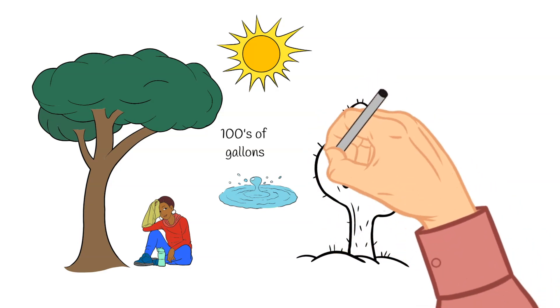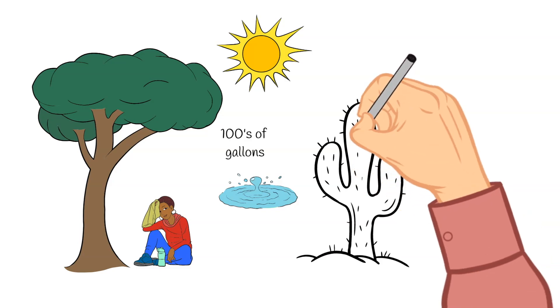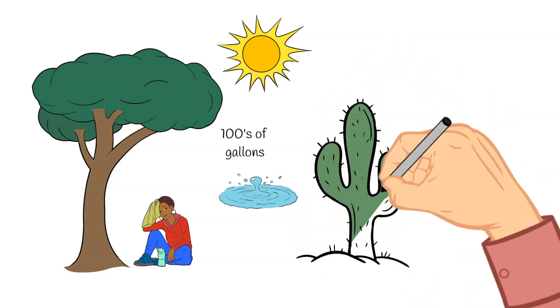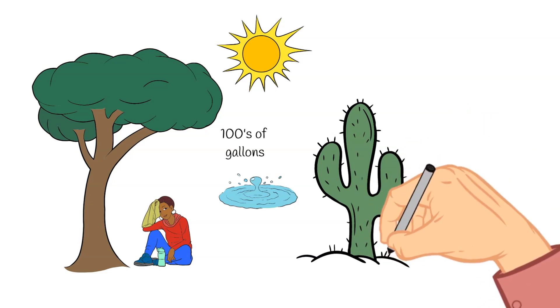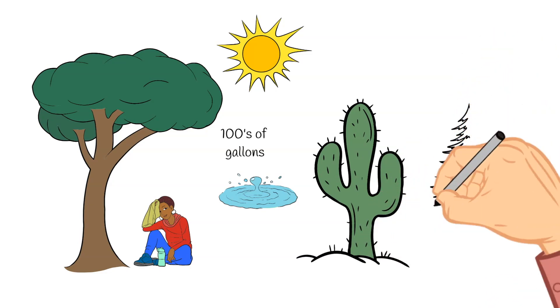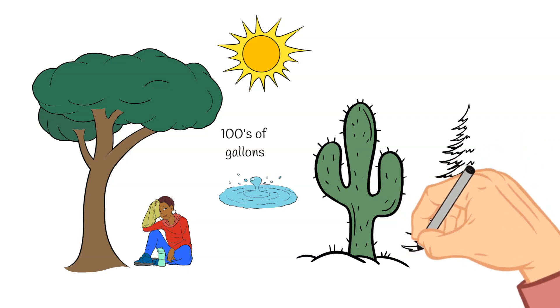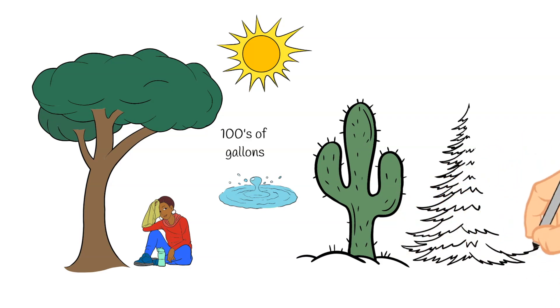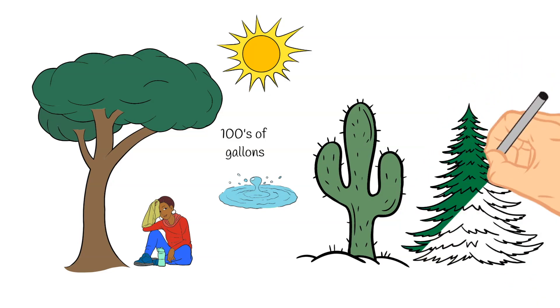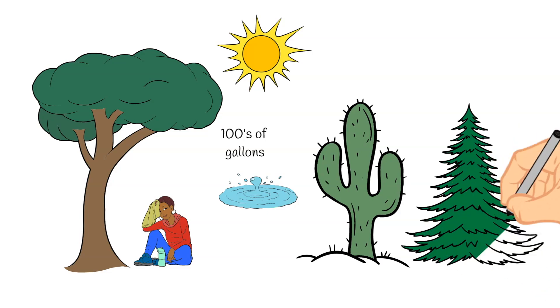Desert plants and conifers have adaptations which reduce water loss. And some examples of these adaptations are reduced leaf areas, as in conifers, or thick cuticles and sunken stomata, as in cacti. All of these types of things reduce that transpiration and help to conserve water. Because if there's not a lot of water available, the plant doesn't want to have it evaporating readily from its leaves.